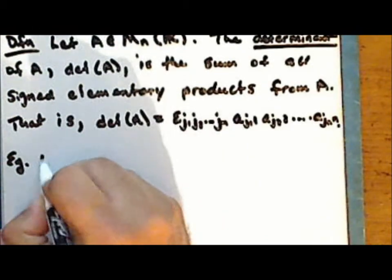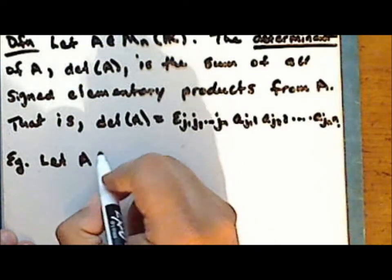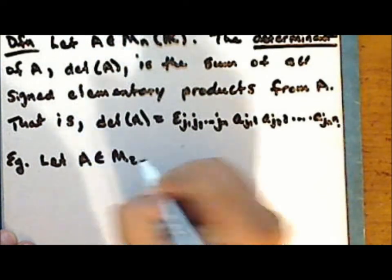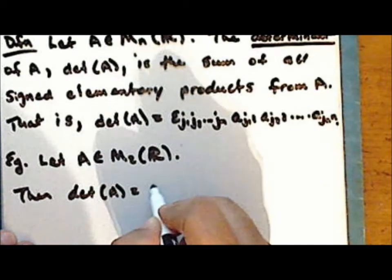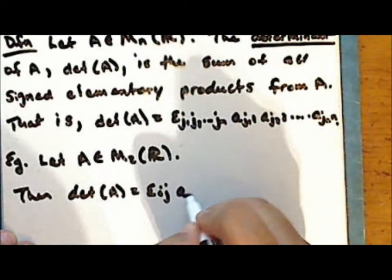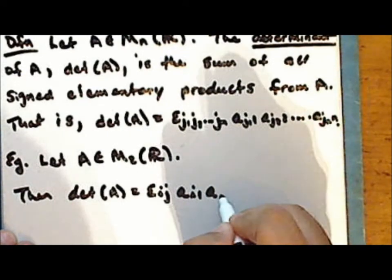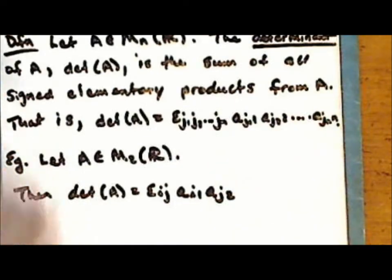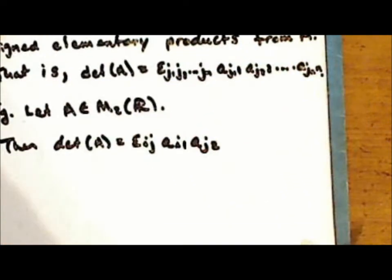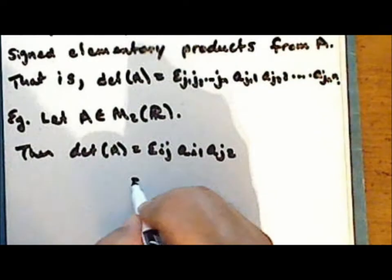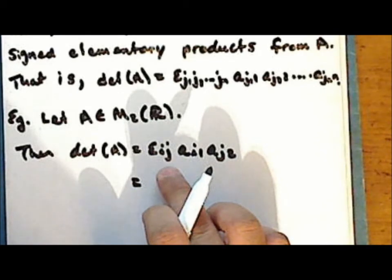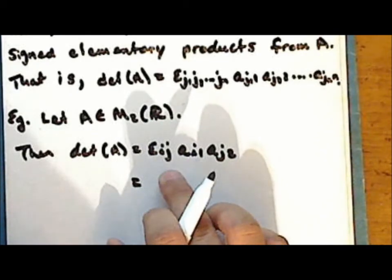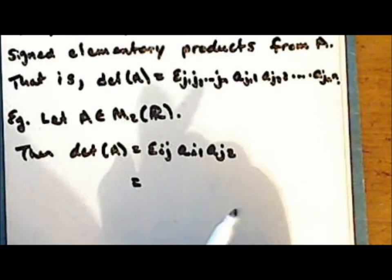Let's look at an example. Let matrix A be a 2 by 2 square matrix. Then the determinant of A is the sum over indices I and J of epsilon sub IJ times A sub I1 times A sub J2. If we expand the sum, the only values of I and J that contribute are those without repeated indices, with I and J ranging from 1 to 2.